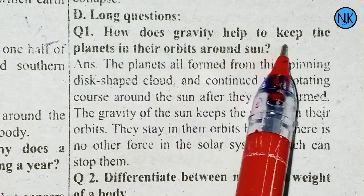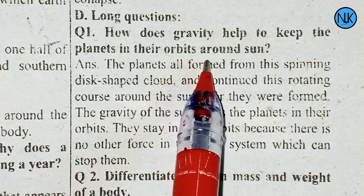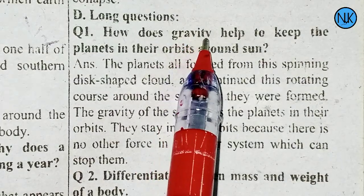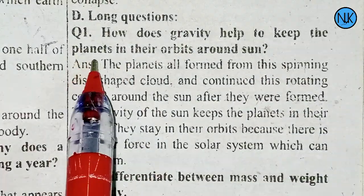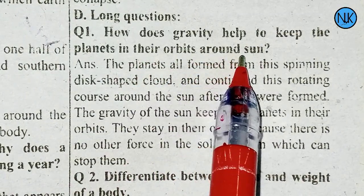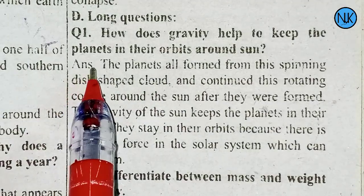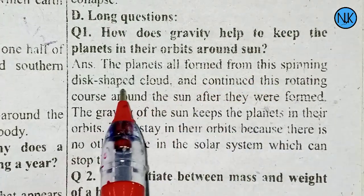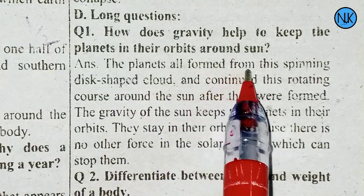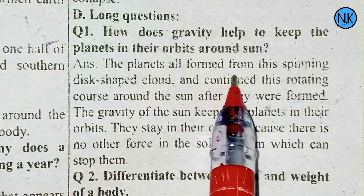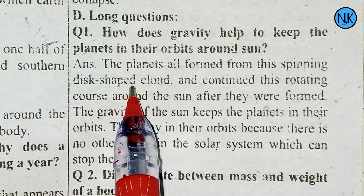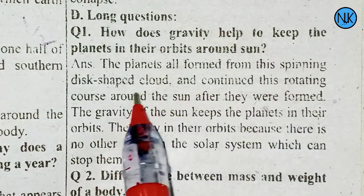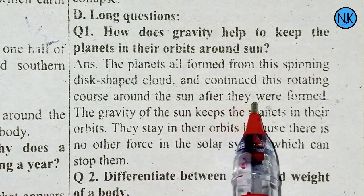How does gravity help to keep the planets in their orbits around our sun? The planets all formed from a spinning disk-shaped cloud. They continued this rotating course around the sun after they were formed.